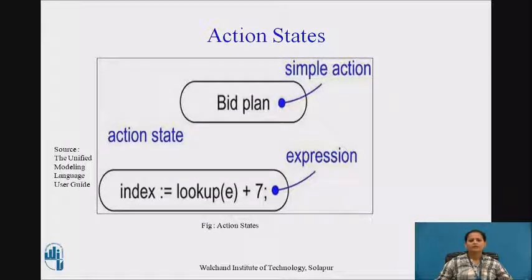Actions. Action states and activity states are just special kinds of states in a state machine. When we enter an action or activity state, we simply perform the action or the activity and when we finish, control passes to the next action or activity. Figure shows an example of action state. We can see bid plan as a simple action and index equal to lookup e plus 7 as an expression which is again an action state.